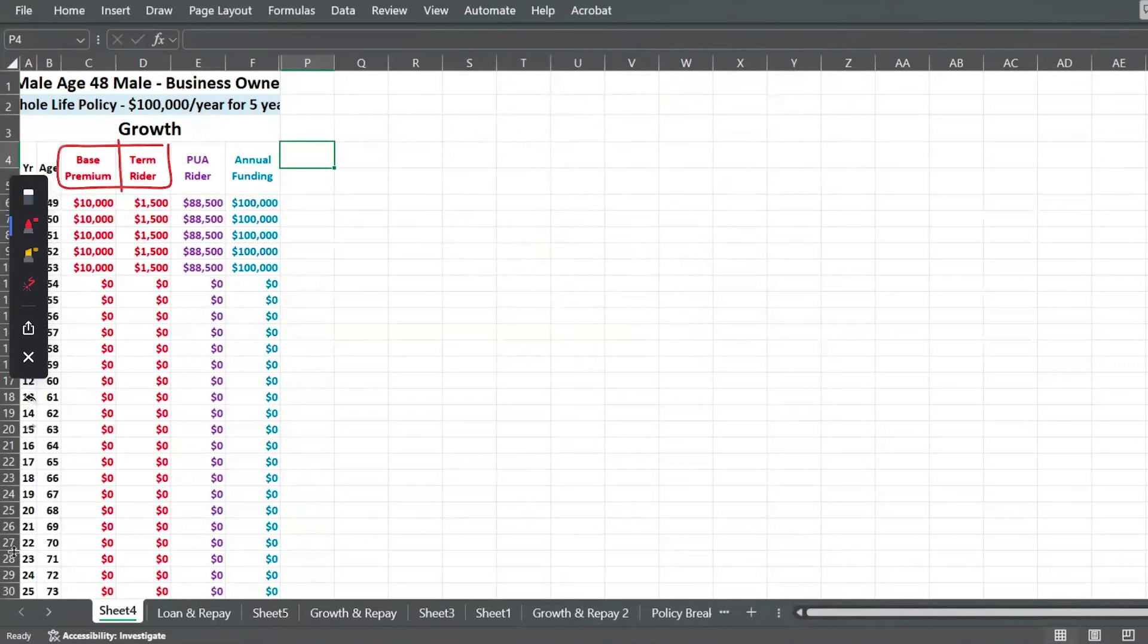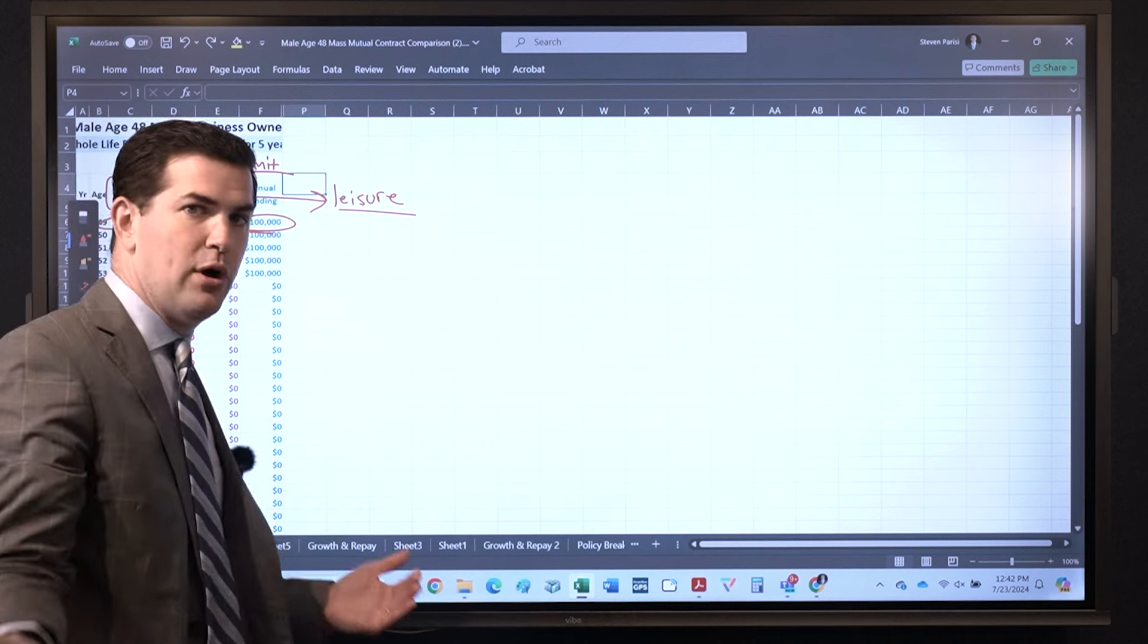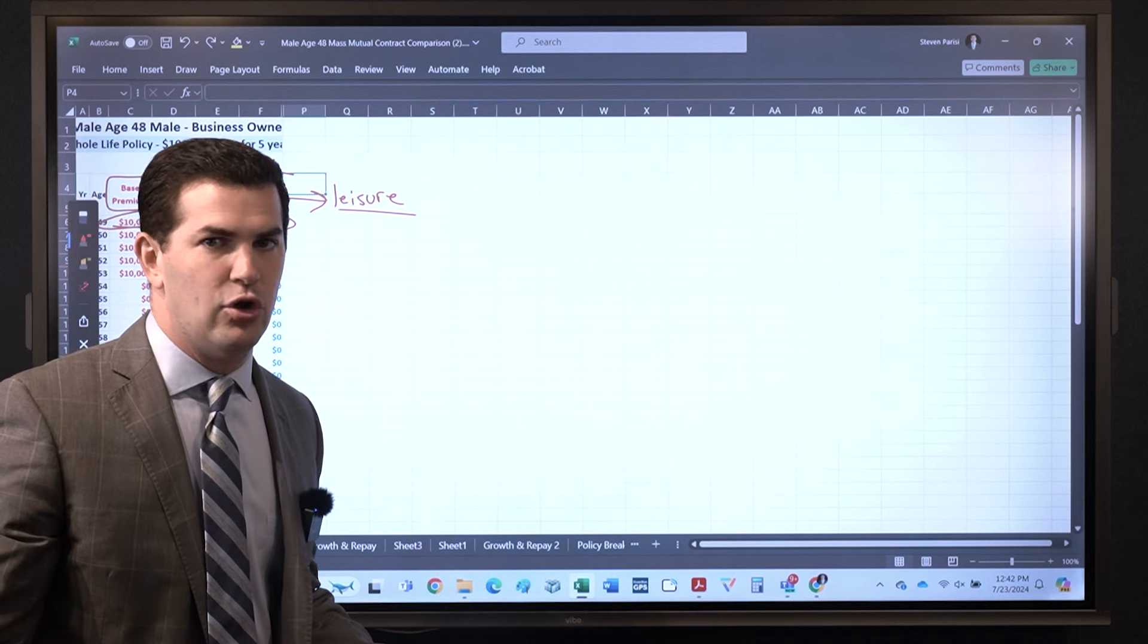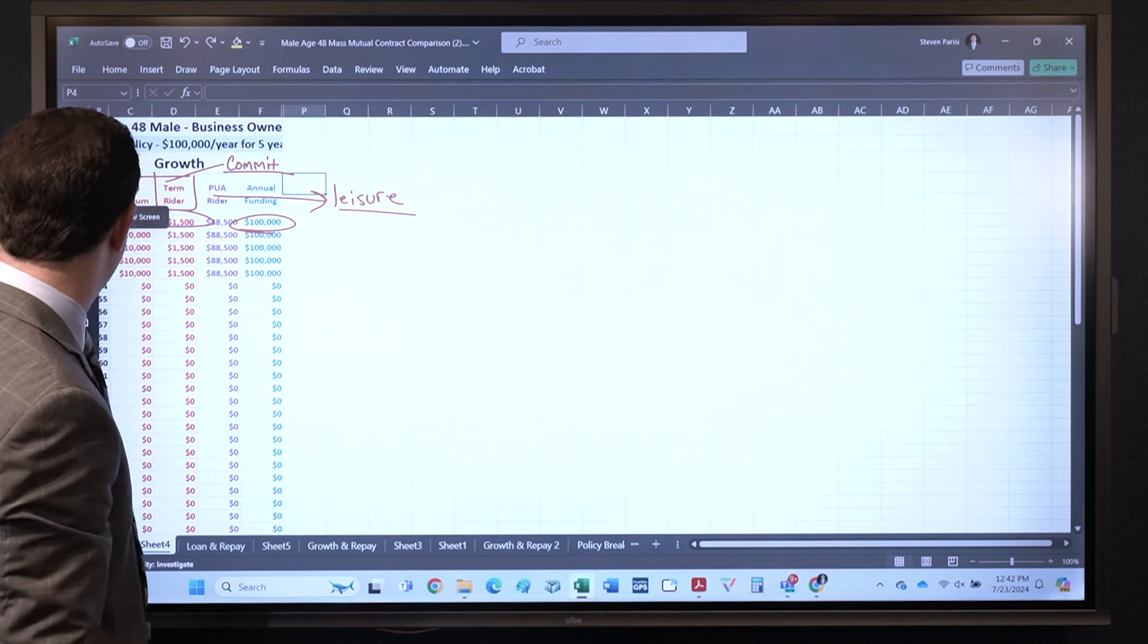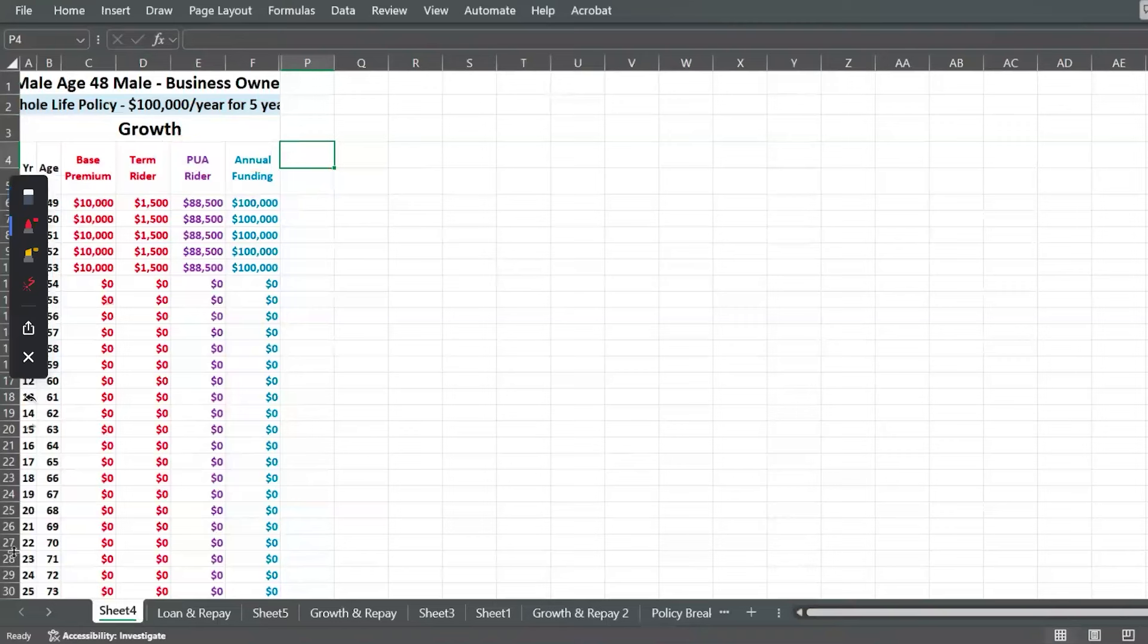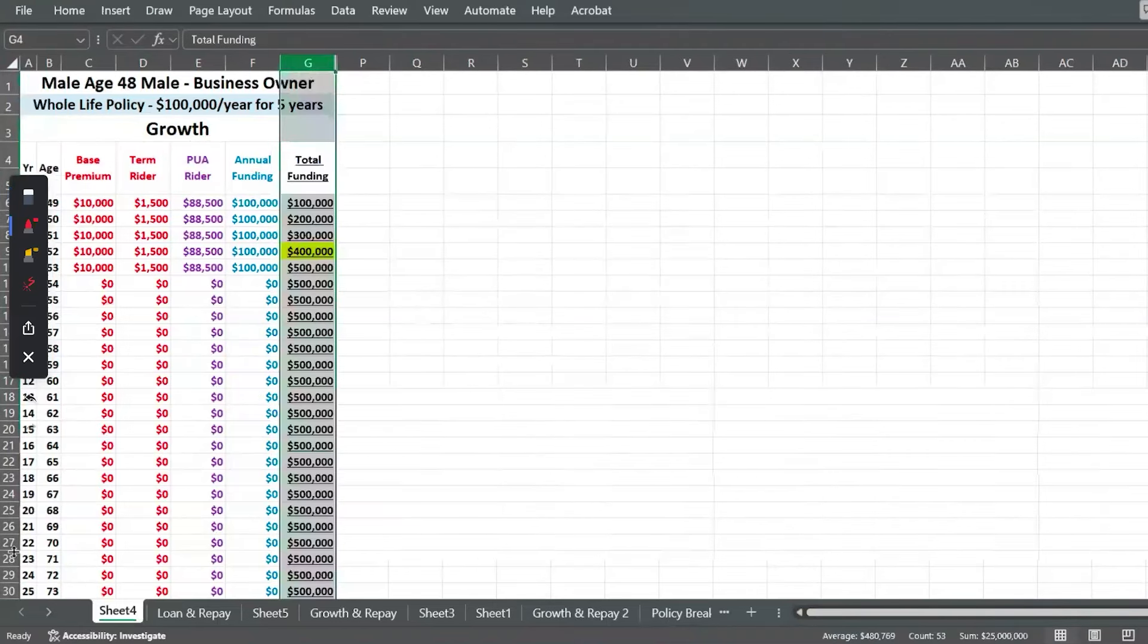And then consider companies and products that allow you to add PUAs at your leisure. So now I know I can pay in up to $100,000 per year but I'm not on the hook, I'm not required to do that, making it very, very flexible. And then we've got our total funding: $100,000 for five years, $500,000.